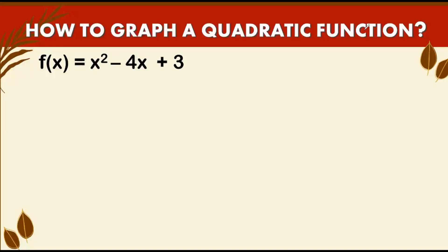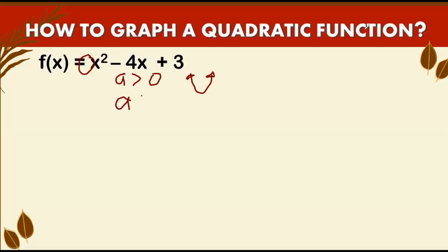Welcome back to Math Wizard Tutor. Today's video is about how to graph a quadratic function. The graph of a quadratic function is a parabola. Note that if the value of a is greater than zero, our parabola is opening upward. And when our a is less than zero, our graph will be opening downward.